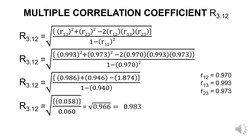Similarly, for the last case, we calculate the multiple correlation coefficient for variable 3 as the dependent variable and variable 1 and variable 2 as independent variables, following the same method. After substituting the zero-order correlation coefficients into the generic expression: the square of 0.993 is 0.986, the square of 0.973 is 0.946, the square of 0.970 is 0.940, and 2 multiplied by 0.970, 0.993, and 0.973 equals 1.874.